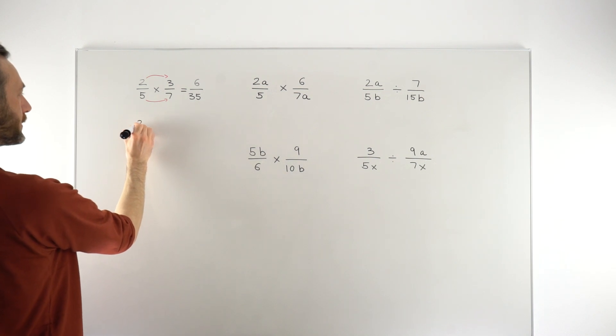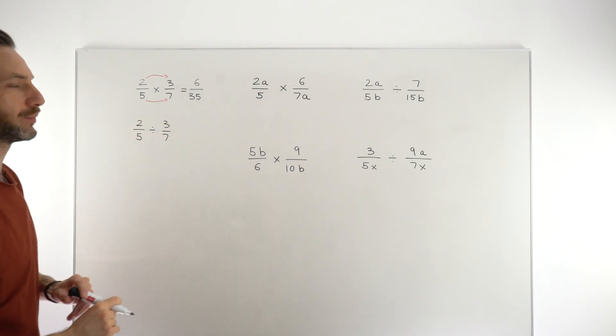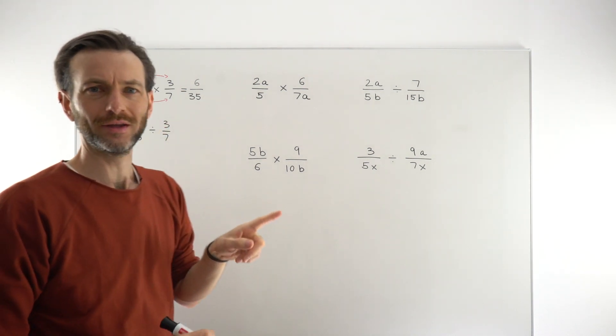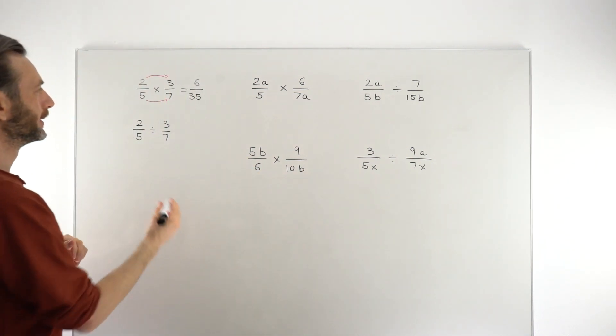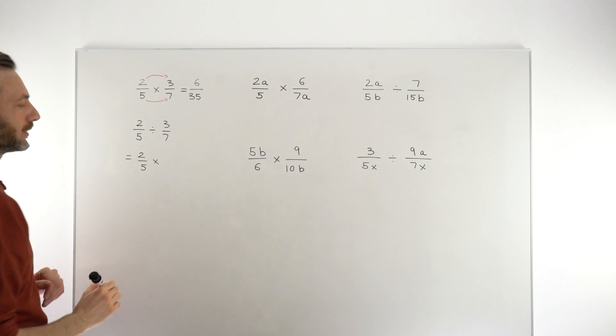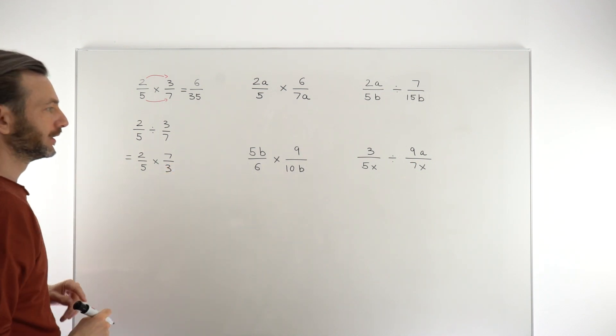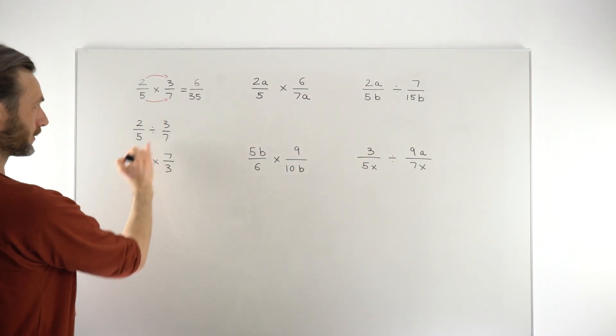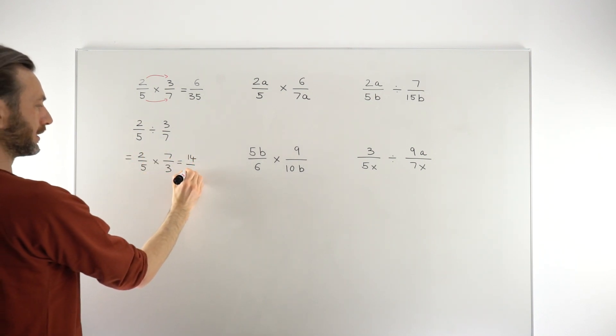If this was a divide instead, so if we had 2 fifths divided by 3 sevenths, it's a slightly more difficult case. We use a little trick here, because it's very difficult to get your head around dividing by a fraction. When we divide by a whole number, we can kind of visualize it, but dividing by a fraction doesn't quite work. So what we do, there's a little trick. You leave the first fraction the same, so 2 fifths. You turn the operation into a multiply, and you invert, or flip, the second fraction. So that's going to apply when we come to look at these algebraic fraction divides as well. And then you just take the same multiply rule we had on the top, so 2 times 7 gives you 14, 5 times 3 gives you 15, so the answer would be 14 over 15.